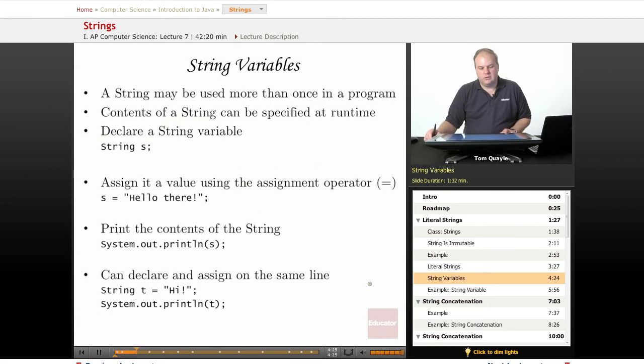With string variables, a string can be used more than once in a program. The contents of a string can be specified at runtime, which means you don't have to type it in while you're typing your program. Runtime means while your program is running, the contents can be specified. So the way you do this is you declare a string variable.